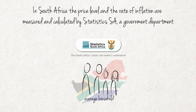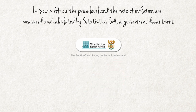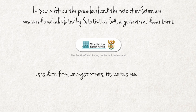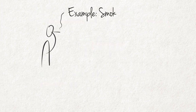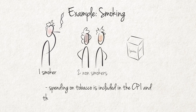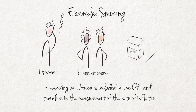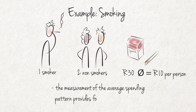An average household cannot be found in practice, but it is used for the measurement of inflation to calculate an inflation rate for the whole country. Statistics South Africa uses data from, amongst others, its various household surveys as well as the CPI report to estimate the average price increase. One example is smoking: because some members of the public smoke, spending on tobacco is included in the CPI. This is tantamount to assuming that there are smokers in each household, which is naturally not true. Nevertheless, the measurement of the average spending pattern provides for spending on tobacco.